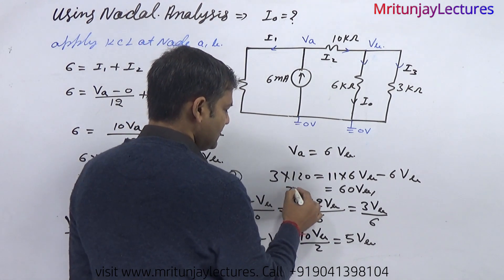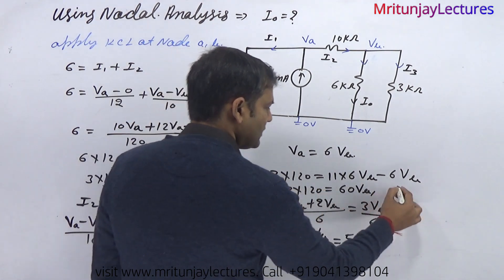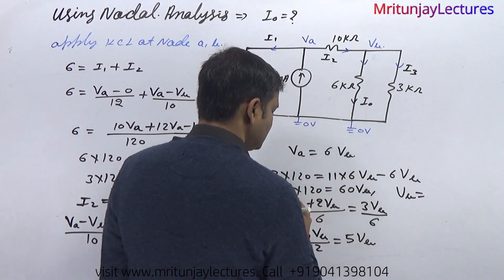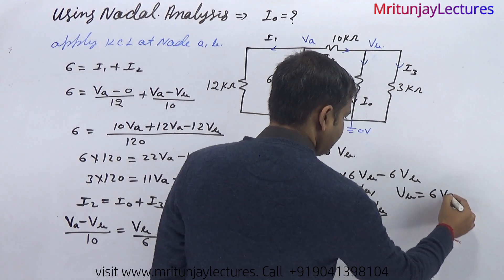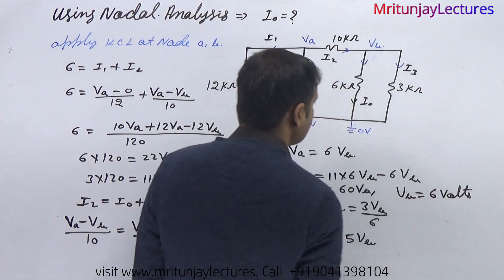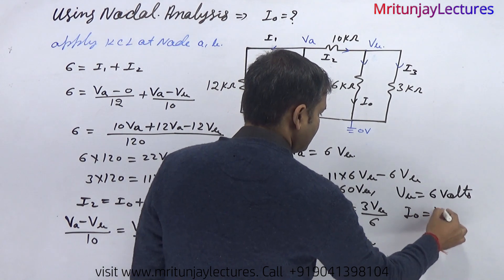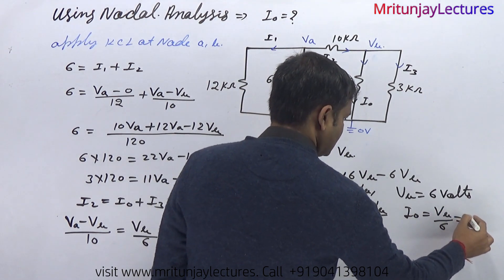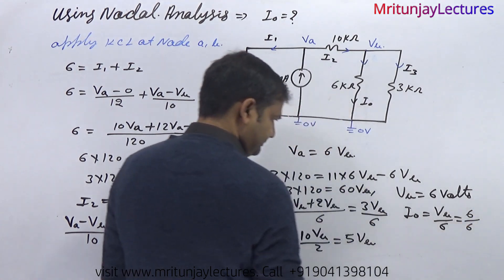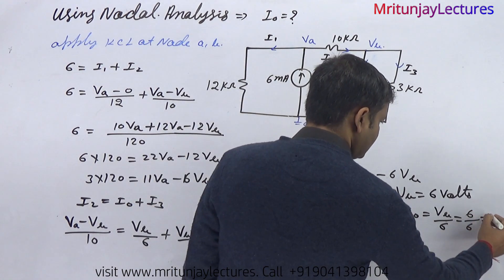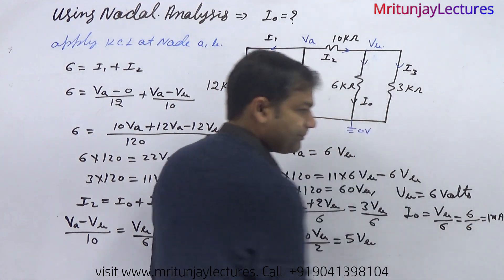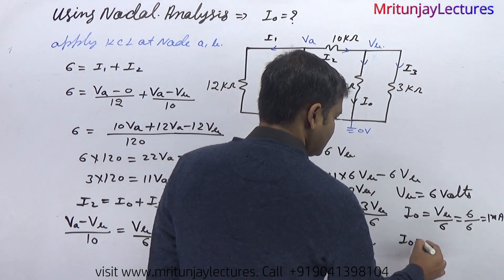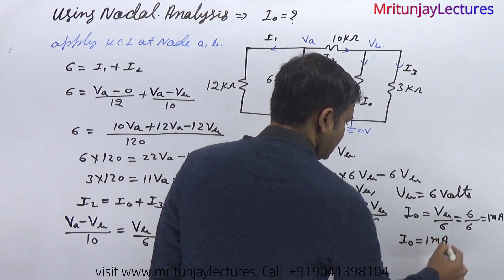So 60Vb equals 3 times 120, therefore Vb equals 6 volts. Now i0 equals Vb divided by 6, so i0 equals 6 divided by 6, which is 1 milliampere. i0 is 1 milliampere — that is the right answer.